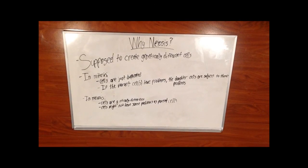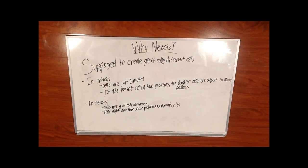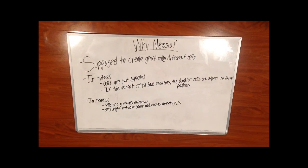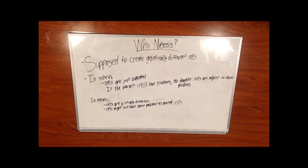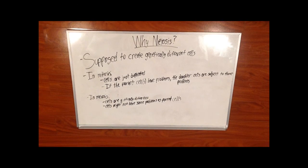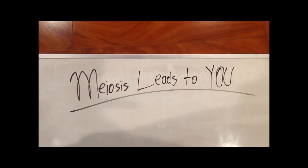The point of meiosis is to create genetically different cells. In mitosis, cells are simply duplicated. If the cell has problems, then those will pass on to the daughter cells in mitosis. In meiosis, daughter cells won't have the same problems as the parent cells. This is because cells are genetically different and cells might not have the same problems as the parent cells.